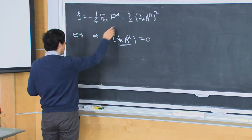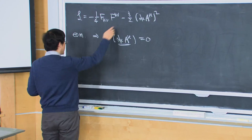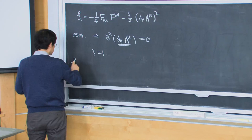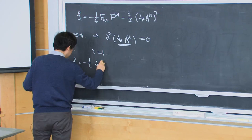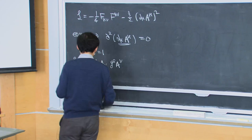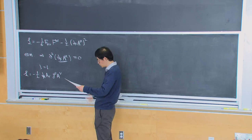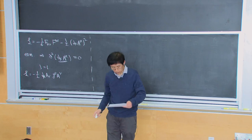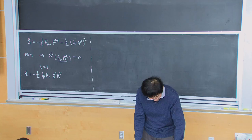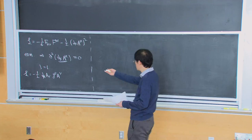In particular, the action is especially simple for xi equal to 1, in which case we just have the action in a very simple form — as if you just have four decoupled massless scalars. And so we can just proceed to copy our results for the massless scalars, and treat each A_mu as a massless scalar.